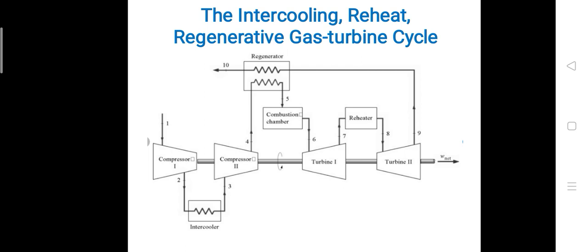The exit gases from the low pressure turbine pass through the regenerator. The regenerator acts as a heat exchanger — it exchanges heat from the exhaust gases to the compressed air coming out from the HPC, the high pressure compressor. This is the schematic diagram of the gas turbine with intercooling, reheat, and regenerative system.